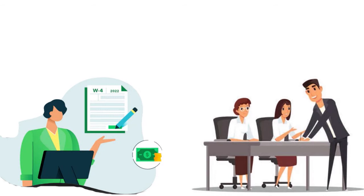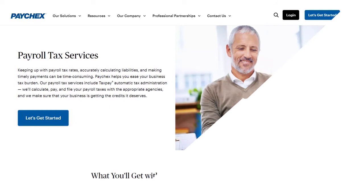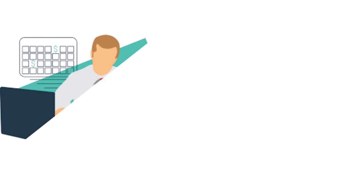Form W-4 tells the employer the employee's marital status and whether additional withholding should be made to cover certain personal taxes that will reduce their income taxes. If no W-4 is provided, the employer withholds as if the employee were single with no other adjustments. Employees should always file Form W-4. Employers relying on outside payroll service providers such as Paychex can leave the calculations to them. Some employers who do payroll in-house use software or rely on IRS tables to calculate payroll taxes.